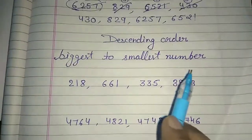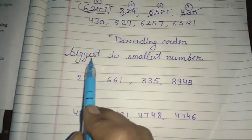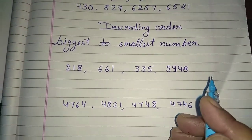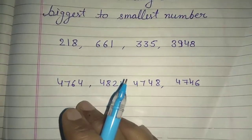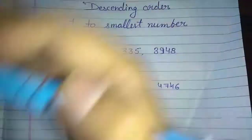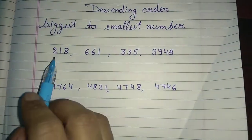Second is descending order. Descending order means arrange the number biggest to smallest number. The same pattern will remain. What we did in ascending, that same we do in descending.